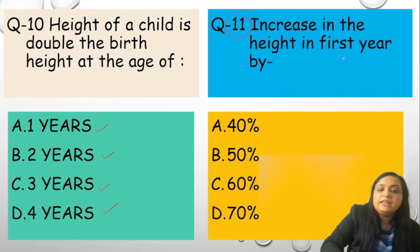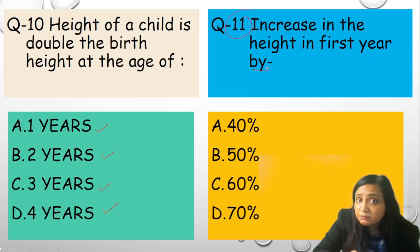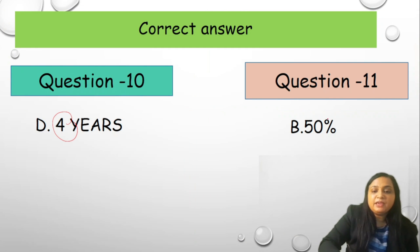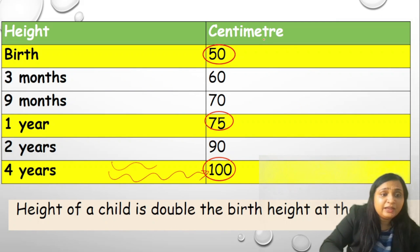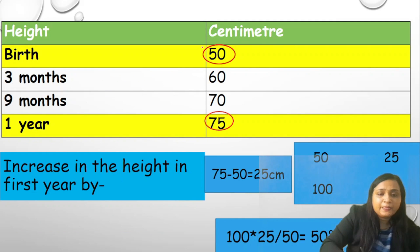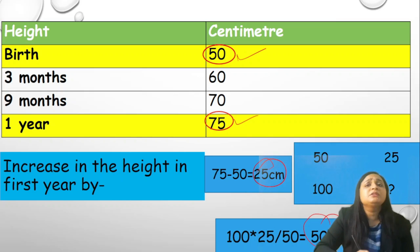Question number 11. Increase in the height in the first year is by - here it is given in percentage. A 40%, B 50%, C 60%, or D 70%. Correct answer is B 50%. For that we should know what is the height at the time of birth. Height at the time of birth is 50. At 1 year it is 25. Total gain of height is 25 cm. How many percentage of the birth it is? It is 50%. If the child is having 50 cm of the height at birth and it gains 25 cm in a year, if it is 50 and 25 then what is there in 100? 100 into 25 divided by 50. It is 50%. It is simple math.